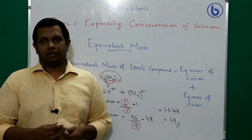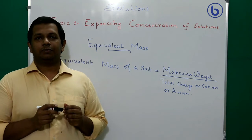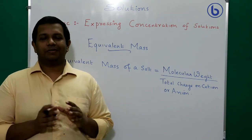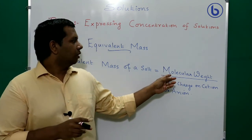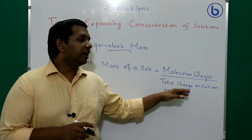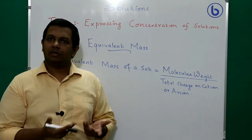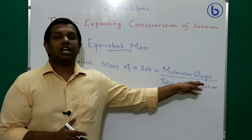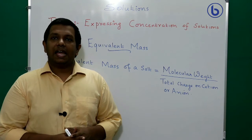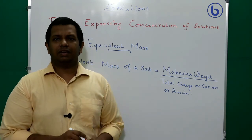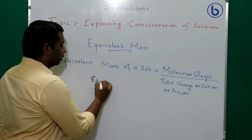Next: equivalent mass of a salt. A salt is formed from an acid-base reaction. The formula is: equivalent mass of a salt = molecular weight ÷ total charge on the cation or anion. You can use either — the total charge on the cation or the total charge on the anion.